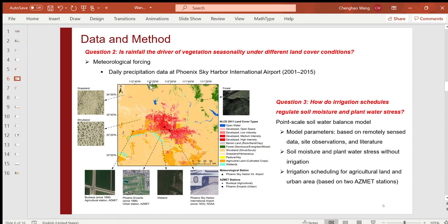To answer the second question, I downloaded daily precipitation data measured at the Phoenix Sky Harbor International Airport for the same 15 years. The precipitation dataset also serves as one of the meteorological forcing datasets for the numerical simulations.